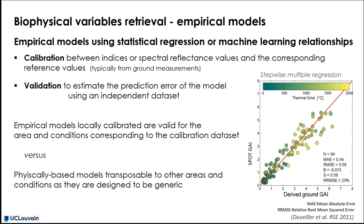The empirical models are calibrated on a specific set of reference data or ground observations. They are based on statistical regression or machine learning relationships between the spectral index value and the corresponding ground reference values. Once the model is calibrated,